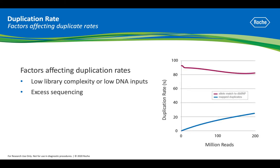The blue line in this graph on the right demonstrates that an 899 KB panel design shows increasing duplicate reads with increasing sequencing. Allele matched to dbSNP, the red line, suggests very little sequencing is needed for this design, and in fact the excess sequencing decreases SNP call accuracy.